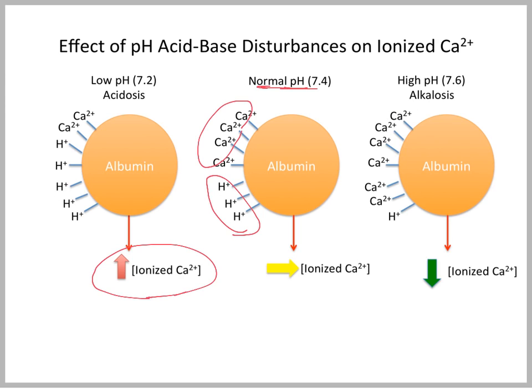Conversely, in a high pH or alkalotic situation, calcium can be more tightly bound to albumin because there is less hydrogen ion competing for those binding sites. So in this case, the ionized calcium would decrease.